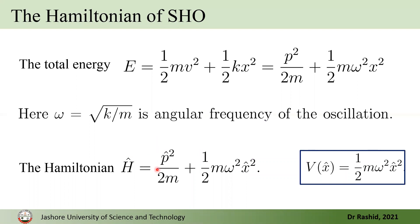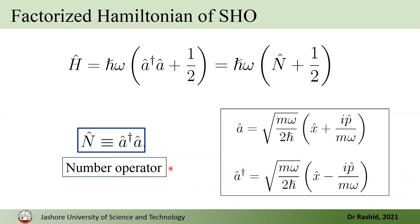We started with the Hamiltonian for the quantum harmonic oscillator — this is the kinetic energy term and this is the potential energy term. We then factorized it to have these expressions. Here, A-dagger and A are two operators defined by these equations. A is called the annihilation operator or lowering operator, and A-dagger is called the creation operator or raising operator. We also defined the product A-dagger A, which is called the number operator, because when it acts on the eigenstate it gives us a number.